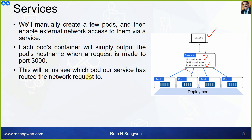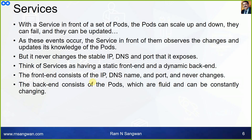Each pod's container will simply output the pod's hostname when a request is made to port 3000. This lets us see which pod our service is routing network requests to. With a service in front of a set of pods, the pods can scale up and down, they can fail, and they can be updated. As these events occur, the service observes the changes and updates its knowledge base of the pods.